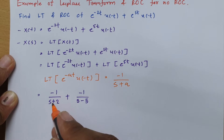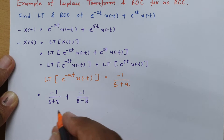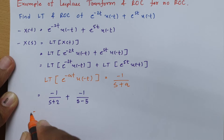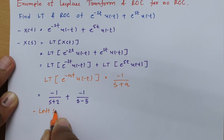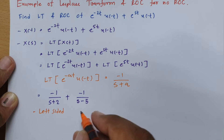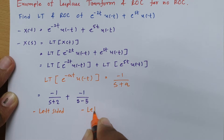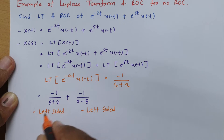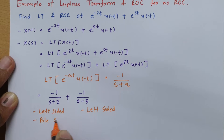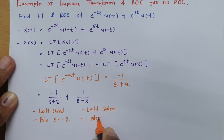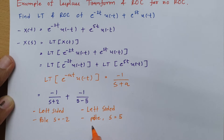Now we need to determine whether each signal is left-sided or right-sided. The first term contains u(-t), so it is a left-sided signal. The second term also contains u(-t), so it is also a left-sided signal. The pole position for the first term is at s = -2, and for the second term the pole is at s = +5.